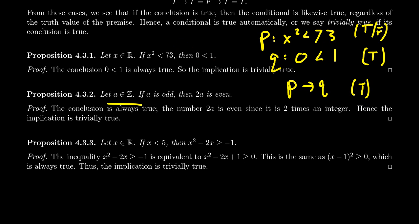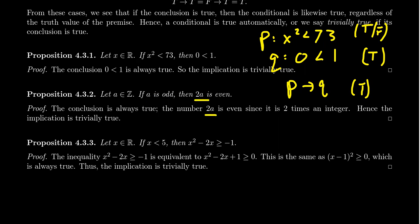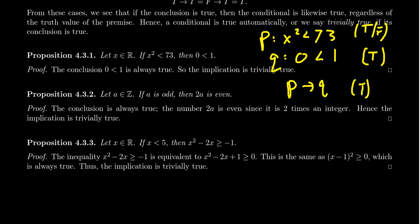Let's look at another one. If A is an integer such that A is odd, then 2A is even. The conclusion is always true regardless of the premise, because 'even' means divisible by two, and 2A is clearly divisible by two. Hence the implication will again be trivially true. The implication P implies Q is true because the conclusion Q is true.